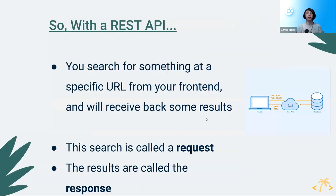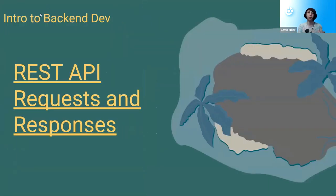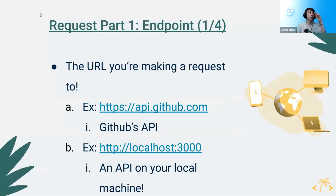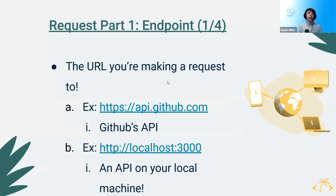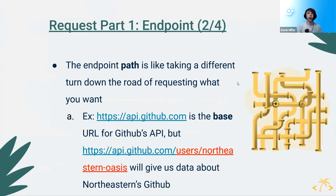To summarize a REST API: you search for something at a very specific URL, get back results — the search is the request, the results are the response. A request has a base URL, like api.github.com or localhost:3000 locally. Then there's the path, which specifies what you're looking for. For example, making a request to api.github.com/users/northeastern-oasis gives you all the information about Oasis's GitHub account.